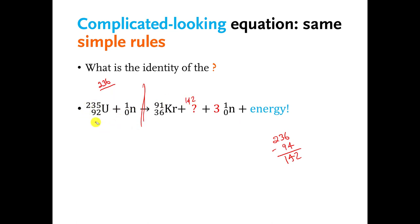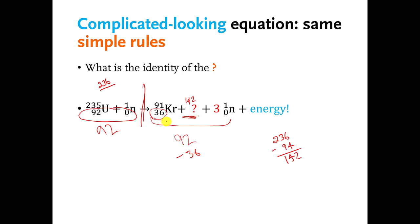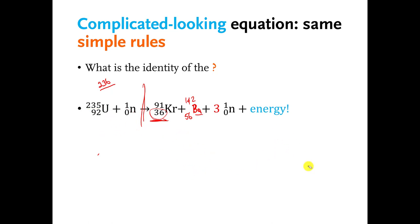Now we do the same thing with the bottom numbers. The bottom numbers on the left add up to 92, so all the bottom numbers on the right have to add up to 92. The krypton atom has 36 of those positive charges. The neutrons have none, so they don't count. The question mark has to have 92 minus 36 positive charges, which equals 56. Looking up 56 in the periodic table, you find it's barium, symbol Ba. That was a more complicated equation but still only had one missing piece — the same rules applied.